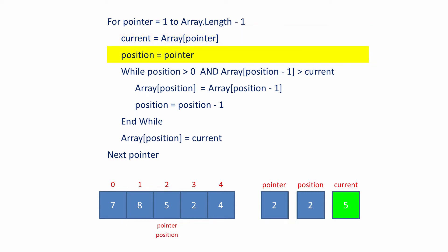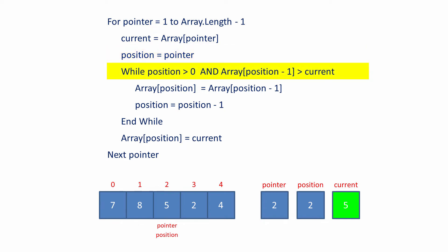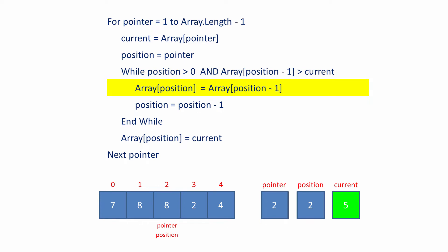The value of position is changed to match that of pointer. The value of position is tested again — it's bigger than zero. The value in the array given by position minus 1, namely the number 8, is bigger than the current value 5, so control can flow into the loop. The value in the array given by position minus 1, that is the number 8, is copied one place to the right in the array as given by the value of position. 8 overwrites 5 in the array. 1 is subtracted from position, so position is now pointing to the second element of the array. The inner loop has executed once.